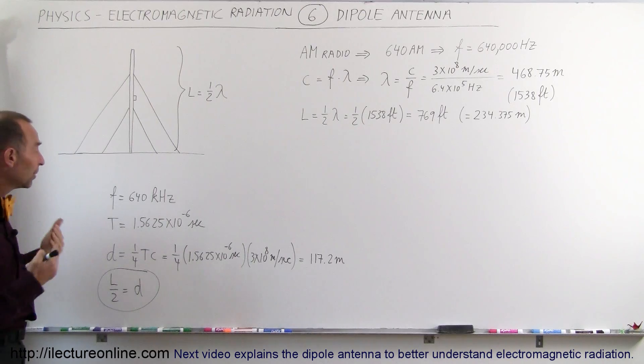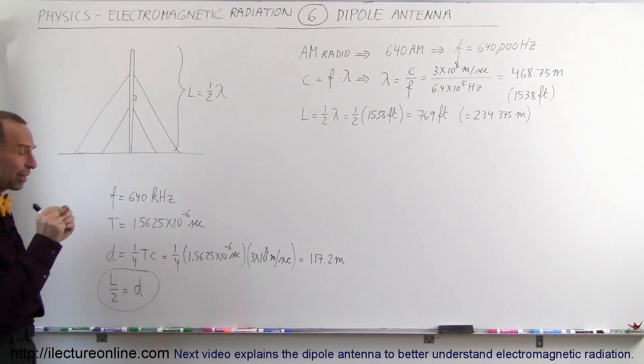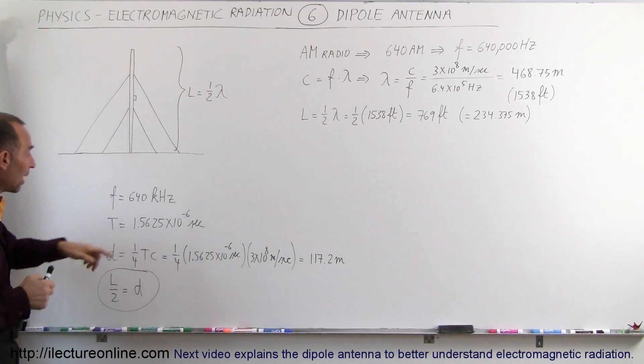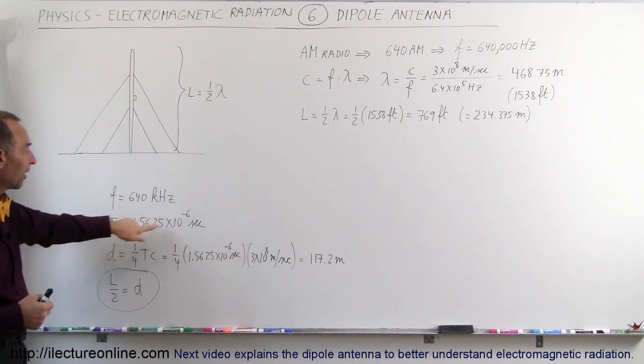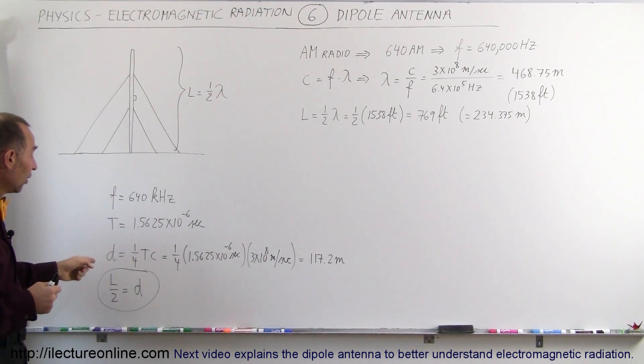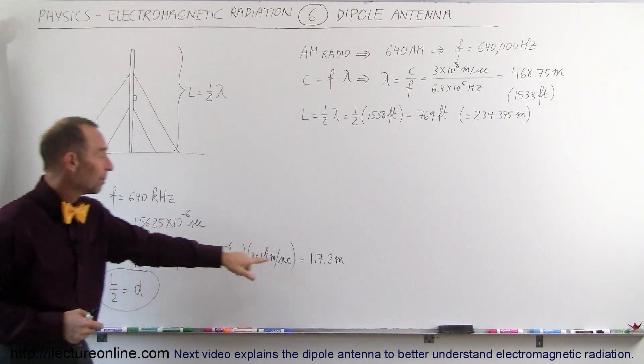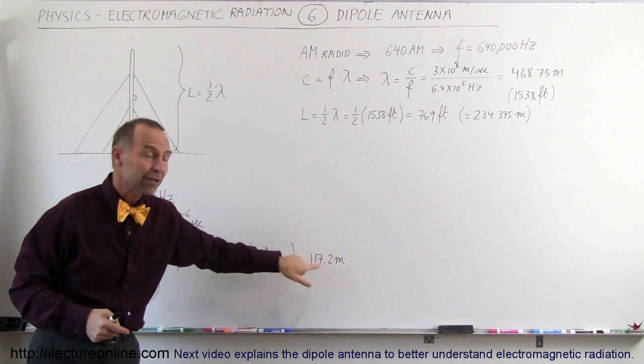Another way of looking at it would be to say that if the frequency is 640 kHz, that means that the period for one particular wave is this much in seconds, 1.56 times 10 to the minus 6 seconds. The distance traveled by the wave for one-quarter of the wave would be one-quarter of the period times C. That ends up being 117.2 meters.